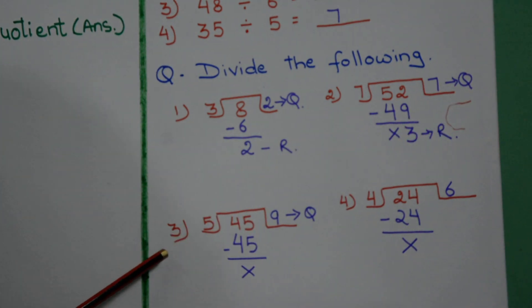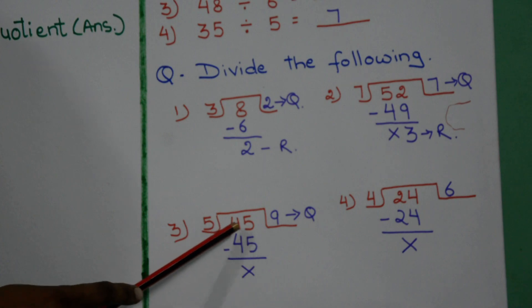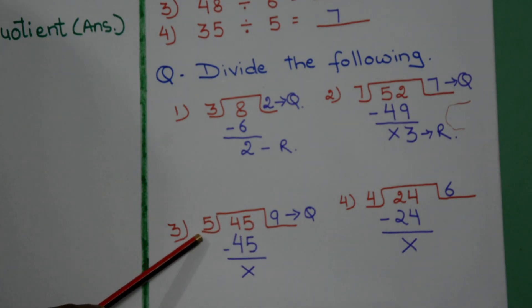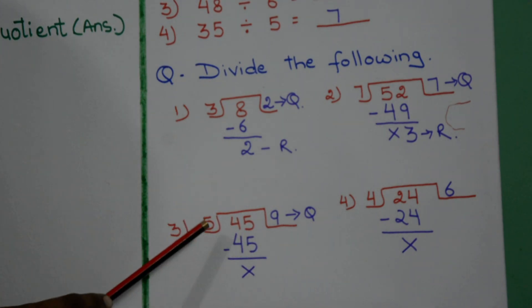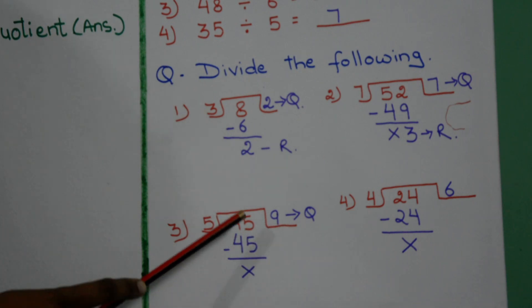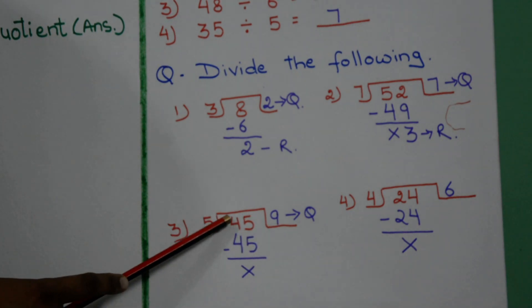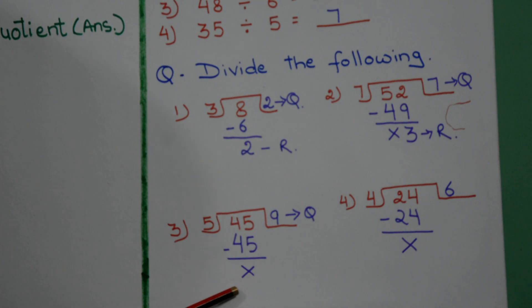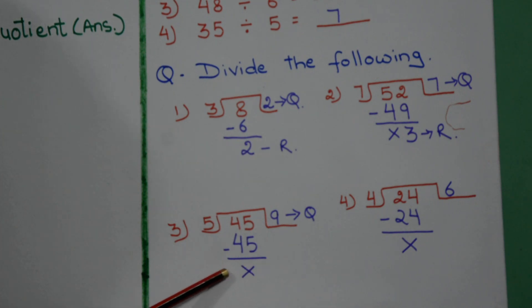Now let's move on to question 3: 45 divided by 5. 5 nines are 45. Minus them — 45 minus 45 is 0, so you will put a cross here for the remainder.